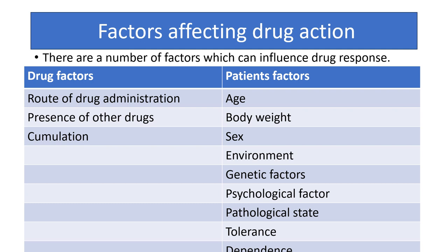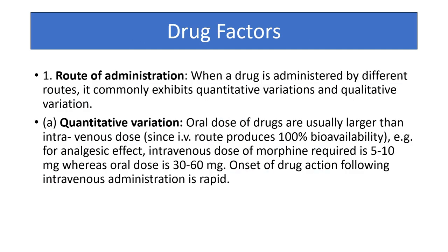Route of drug administration: when a drug is administered by different routes, it commonly exhibits quantitative and qualitative variation. Quantitative variation — when an oral dose is given, it should be larger than the intravenous dose because IV dose directly reaches systemic circulation with 100% bioavailability, whereas oral bioavailability is reduced due to first-pass metabolism.